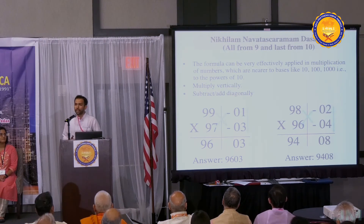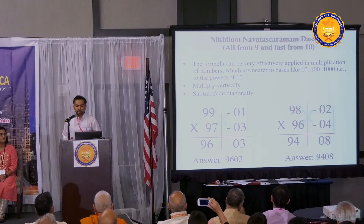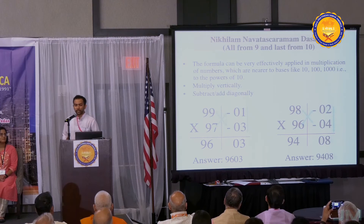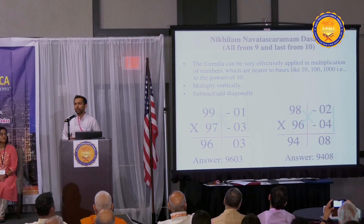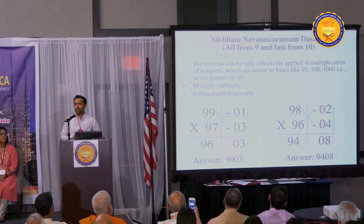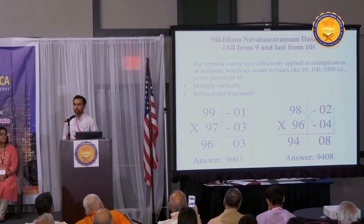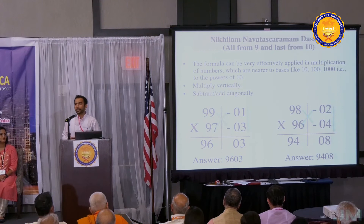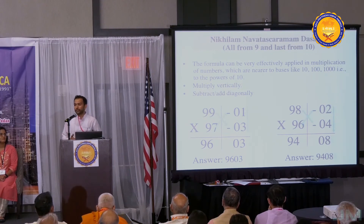The sutra's name is Nikhilam Navatascharam Dasyata. The English translation is 'all from nine and last from ten.' This sutra can be applied to multiply two numbers which are near to ten, hundred, or one thousand — in short, if two numbers are near to a power of ten, you can apply this sutra to multiply them.